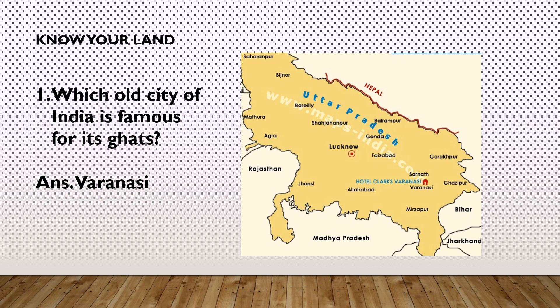The language spoken here is Hindi, Urdu, and Bhojpuri. The state bird is Crane, state flower is Brahma Kamal, and state tree is Ashoka.